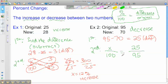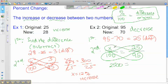Then I cross multiply to solve. So I have 2500 equals 95x. And when I divide both sides by 95,